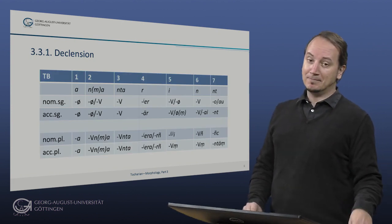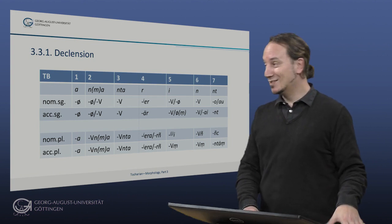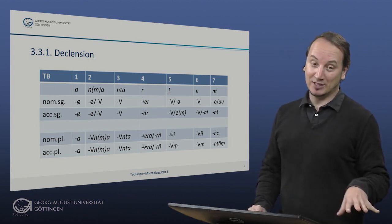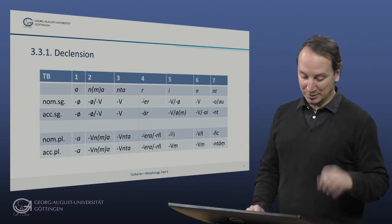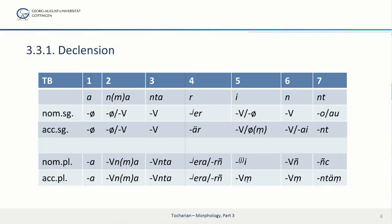Okay, this here is a structural overview of the seven noun classes in Tocharian B. So if we look here, class one is the a-class, with unmarked endings in the nominative and accusative singular and plain -a in nominative and accusative plural.